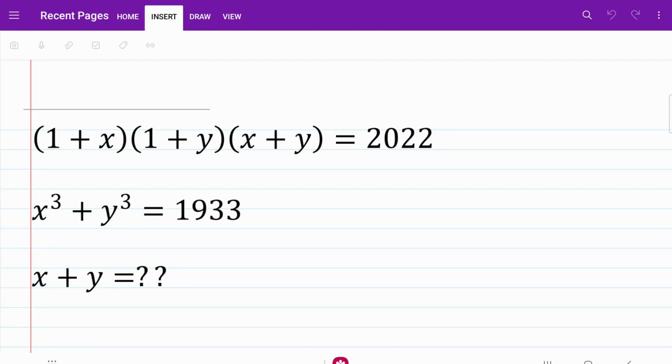In the following question, I have the product of 1 plus x, 1 plus y, and x plus y is equal to 2022, and I'm also given that x cubed plus y cubed is equal to 1933. From there, we are trying to find the sum of x and y.